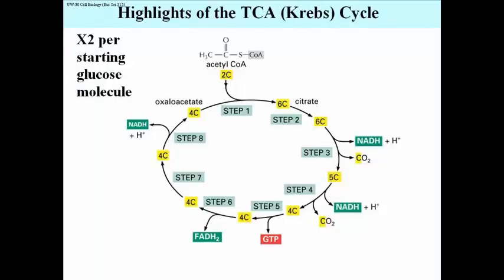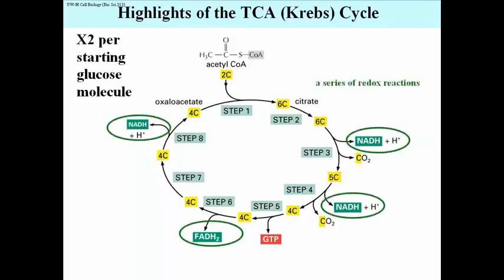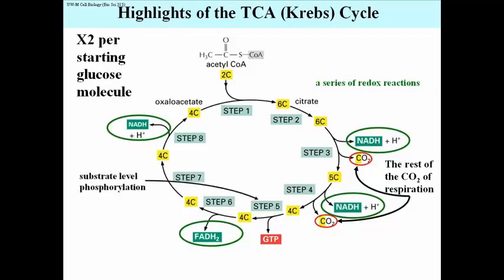Let's take a look at the highlights of the Krebs cycle. Remember, everything you see here happens twice per starting glucose molecule. It is a series of reactions of which four are redox reactions. During that cycle, two more carbon dioxides come off — for two turns of the cycle, that's four of them — representing the rest of the carbon dioxides from respiration. There is, in step 5, a substrate-level phosphorylation. In higher organisms, that results in the production not of ATP but of GTP.